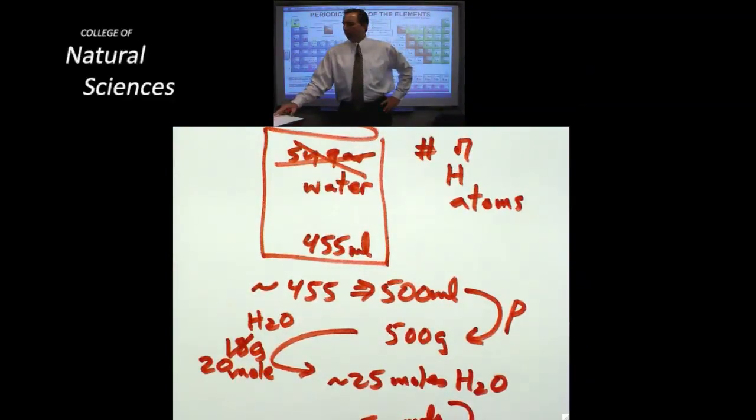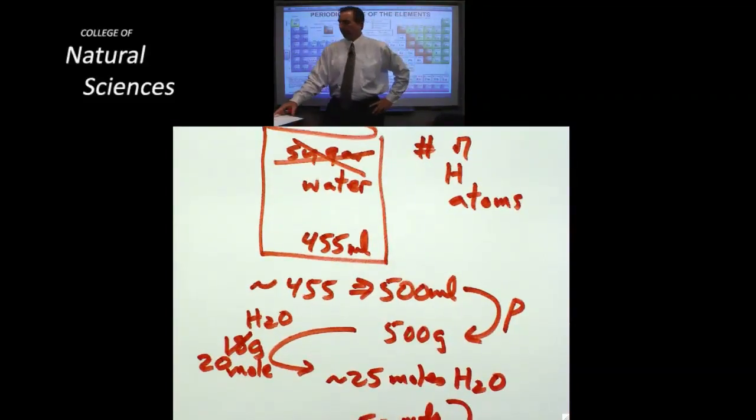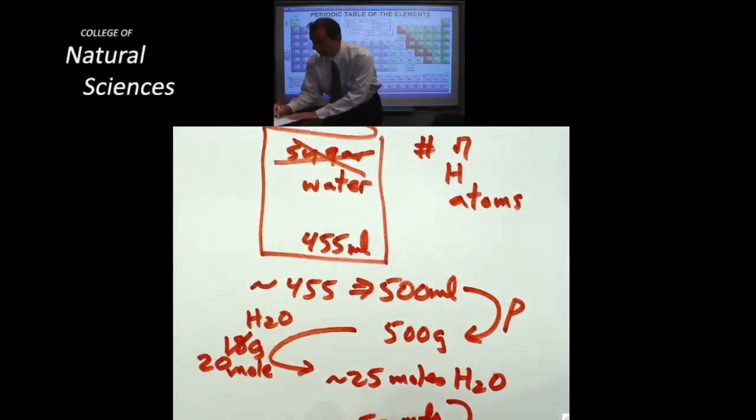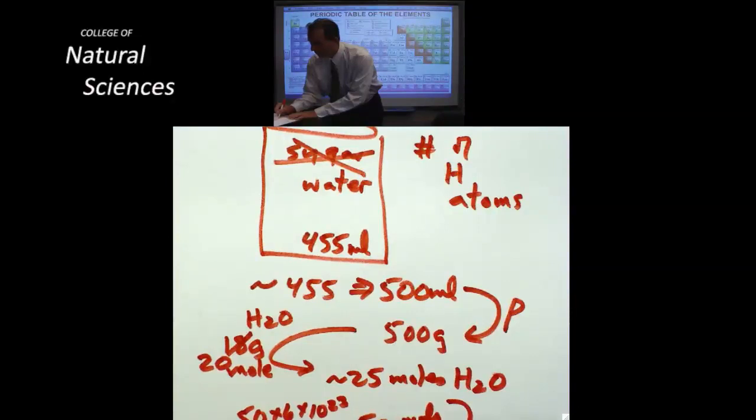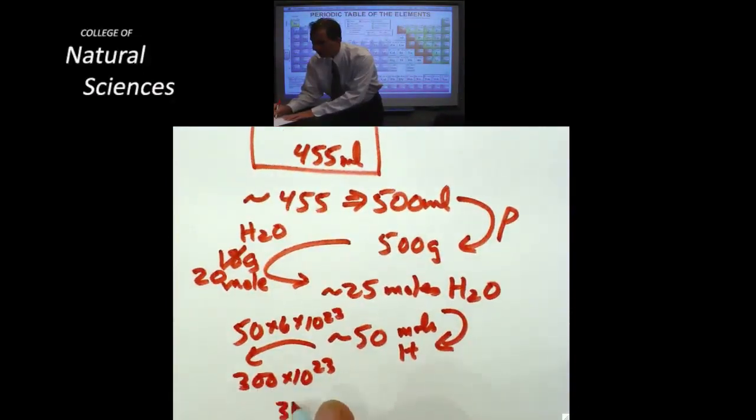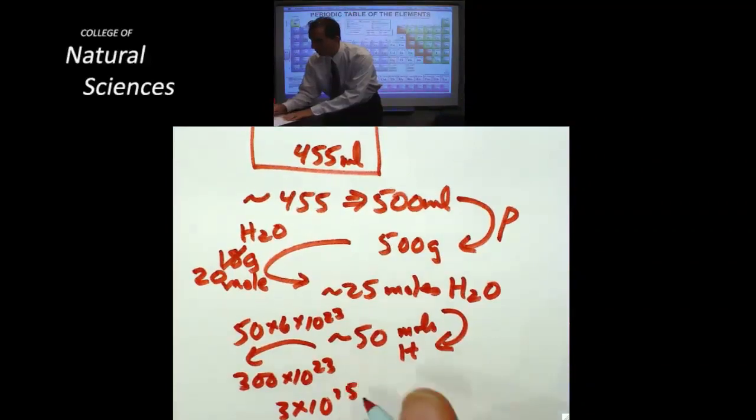But wait a mole of hydrogen is 6 times 10 to the 23rd hydrogens. And since I have 50 of those the actual answer is 50 times 6 times 10 to the 23rd which is about 300 times 10 to the 23rd or 3 times 10 to the 25th atoms of hydrogen.